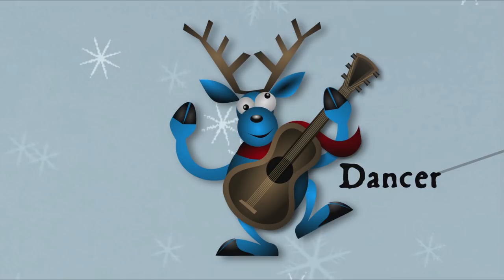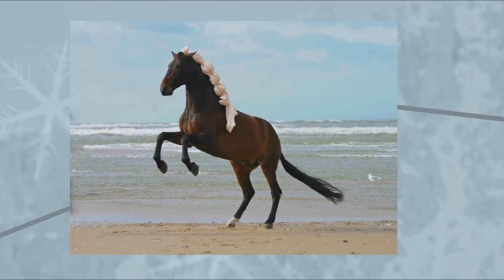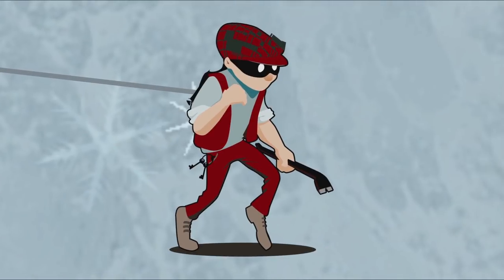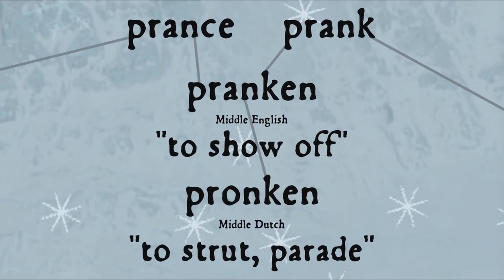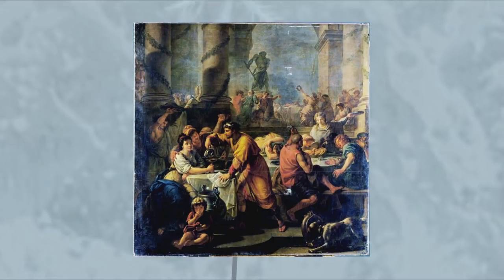Prancer is our next reindeer. Historically speaking, prancer shouldn't be a reindeer but a horse — the word prancer was originally, from the 1560s, thieves' slang for a horse. Prance has been possibly linked to Middle English pranken meaning to show off, from Middle Dutch pranken, and thereby related to the word prank. Christmas too has its own tradition of pranking and misrule. During the late Middle Ages and early modern periods there was a tradition of appointing a peasant as the Lord of Misrule, a mock king who oversaw the Feast of Fools during Christmastide, generally involving drunkenness, wild partying, disguises, and topsy-turvy revelry. This custom has been connected, though not without debate, to the ancient Roman festival of Saturnalia, which featured gift-giving and a carnival atmosphere in which masters served their slaves.